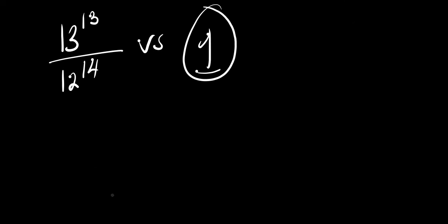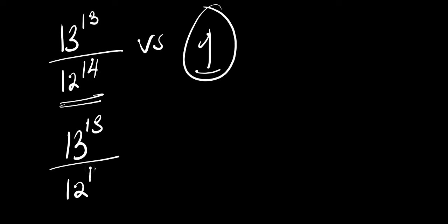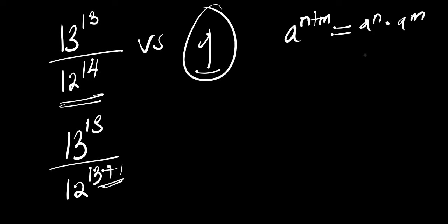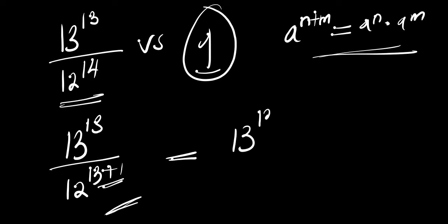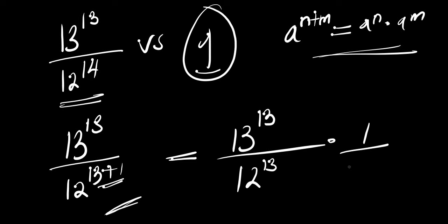We have 13^13 divided by 12^14. We can write 12^14 as 12^(13+1), since 13+1 is 14. Using the identity a^(n+m) = a^n × a^m, this gives us 13^13 divided by 12^13 times 1 divided by 12^1.